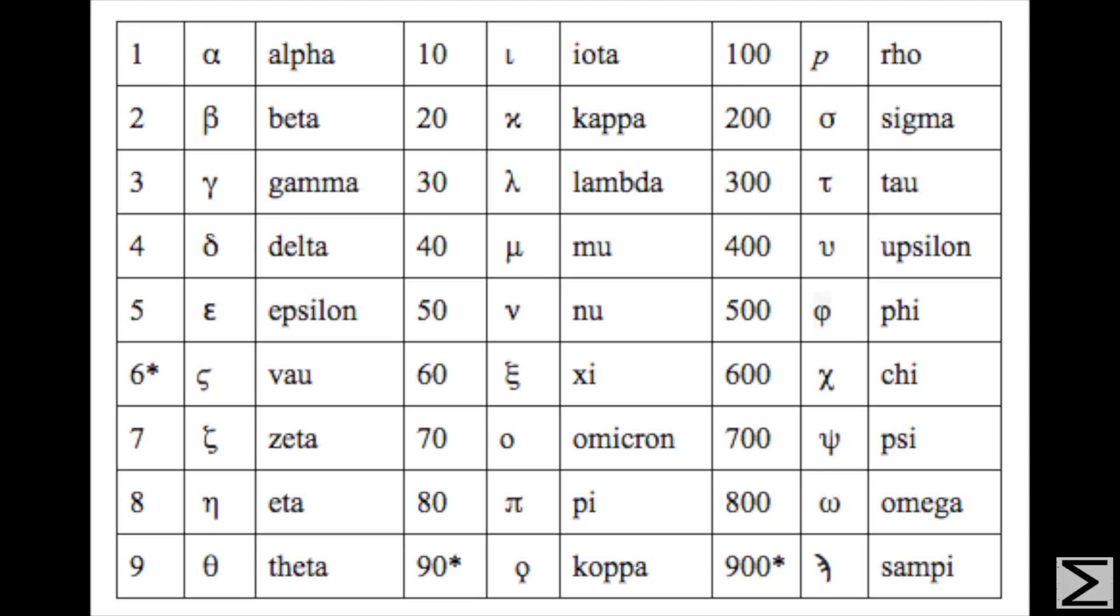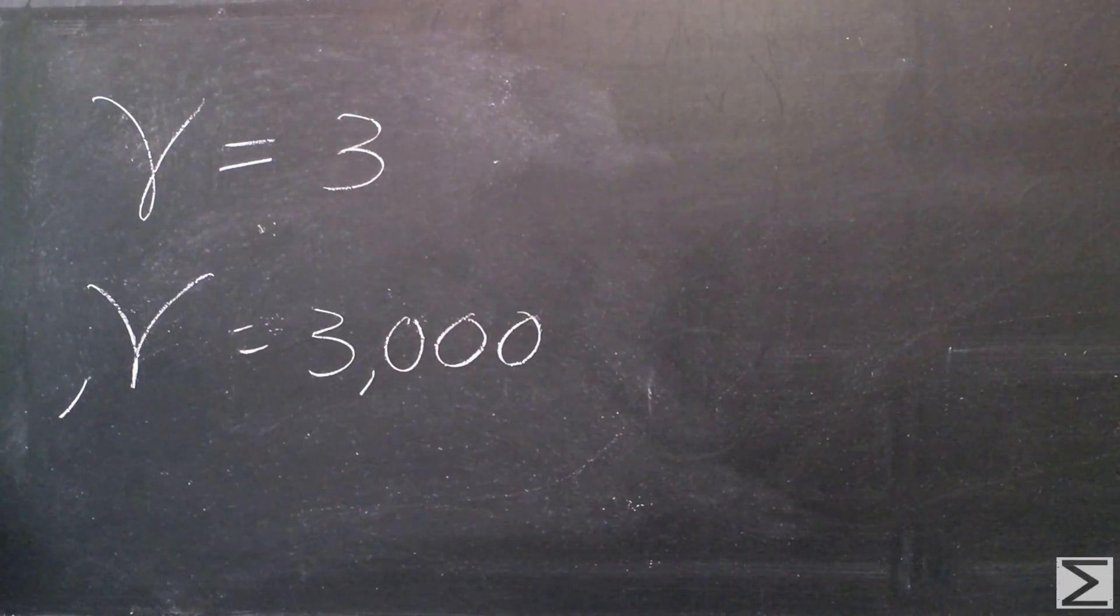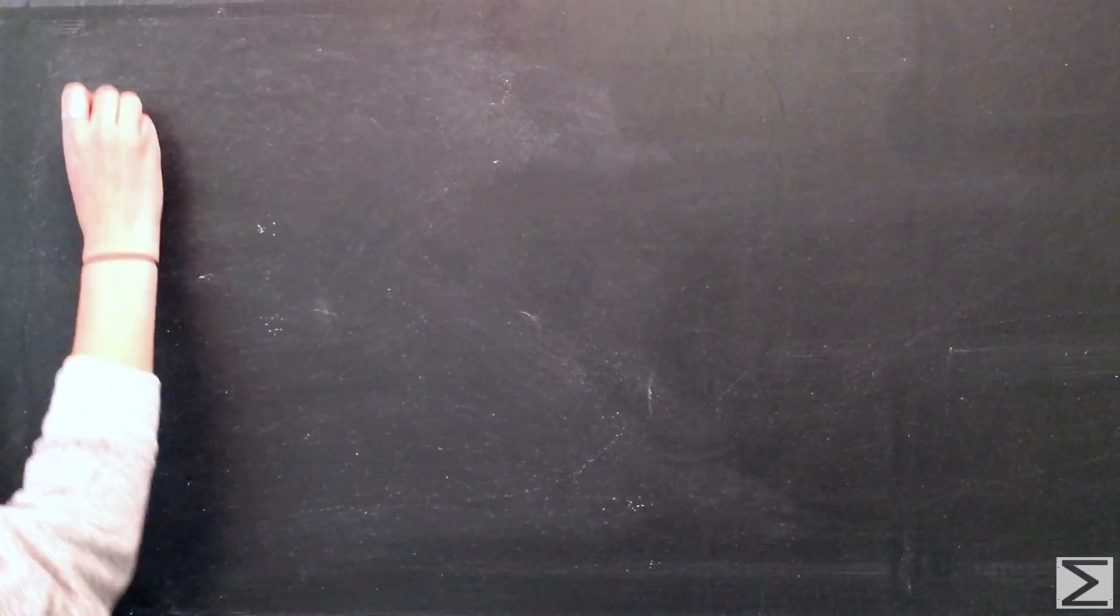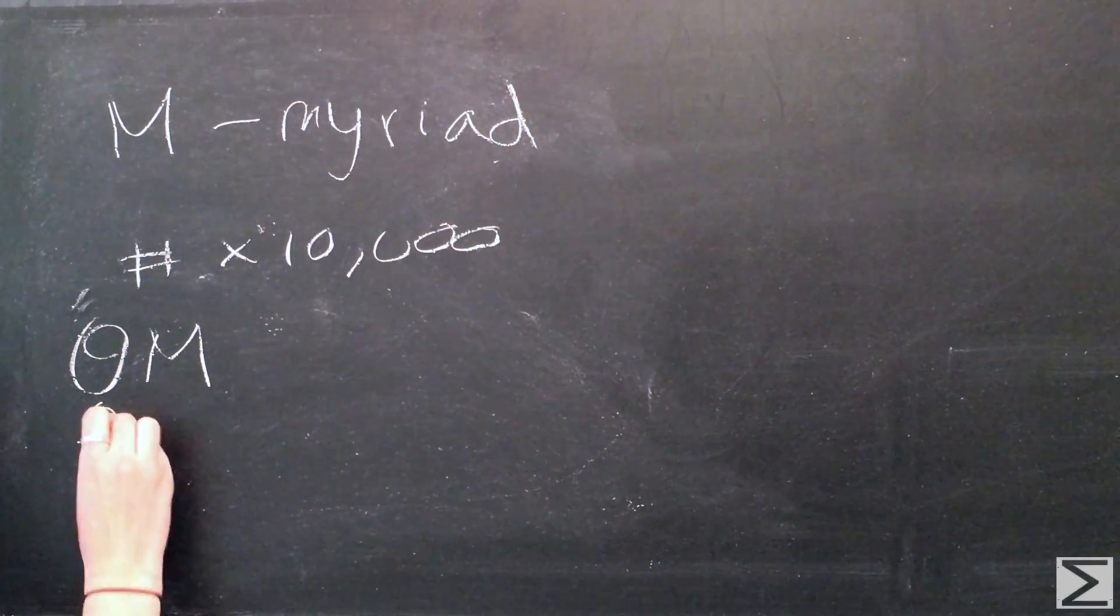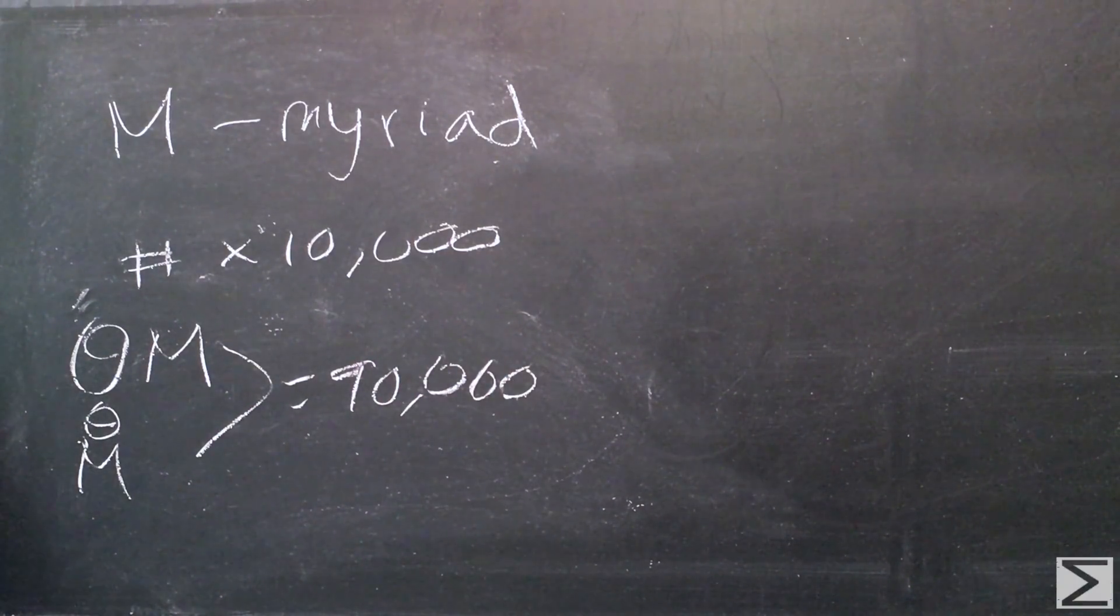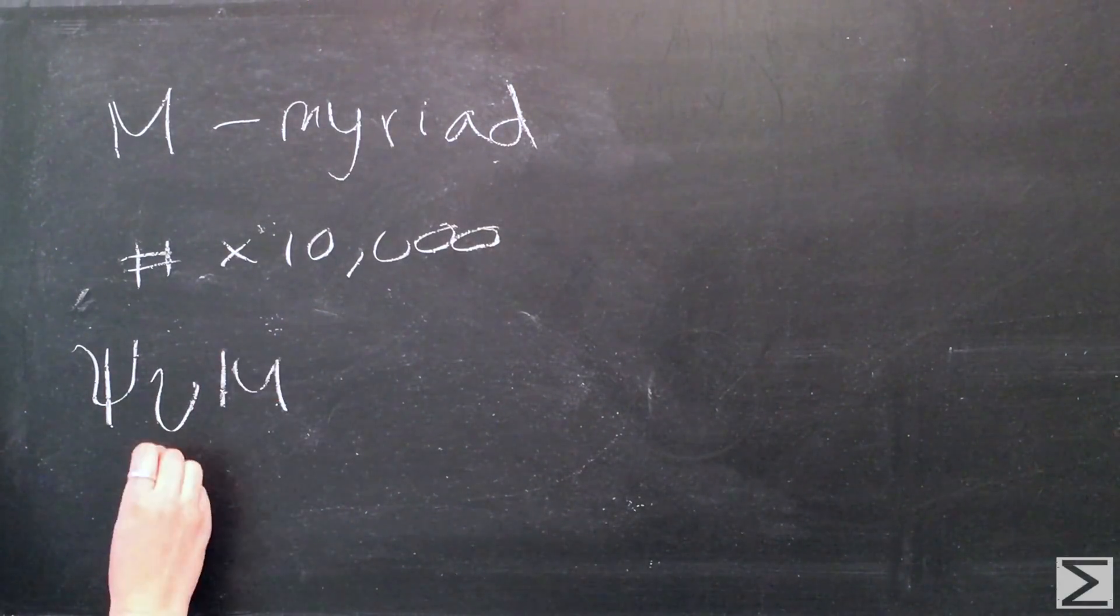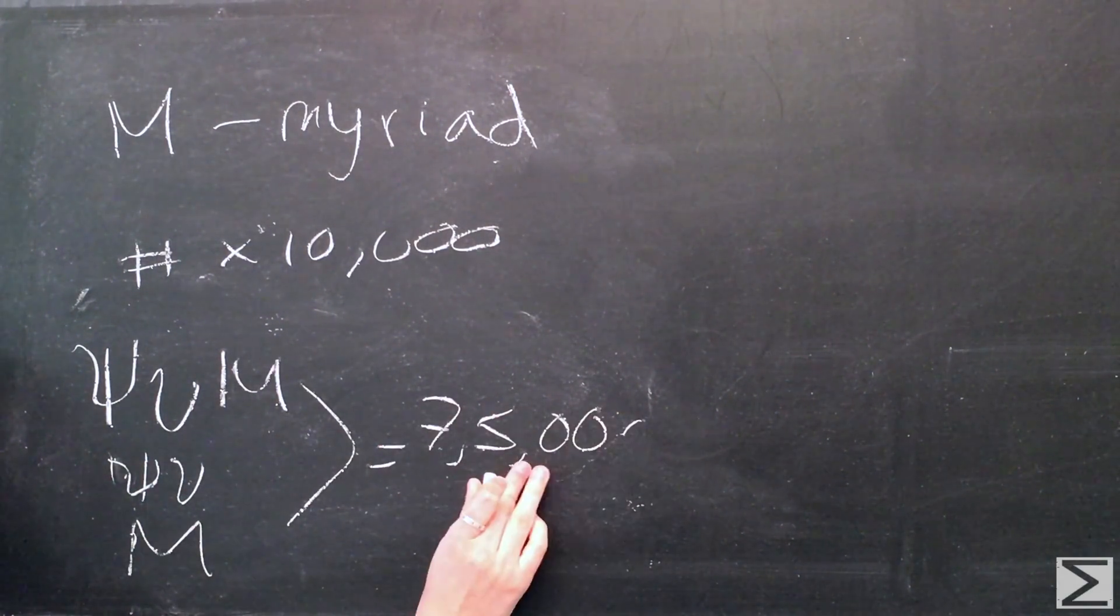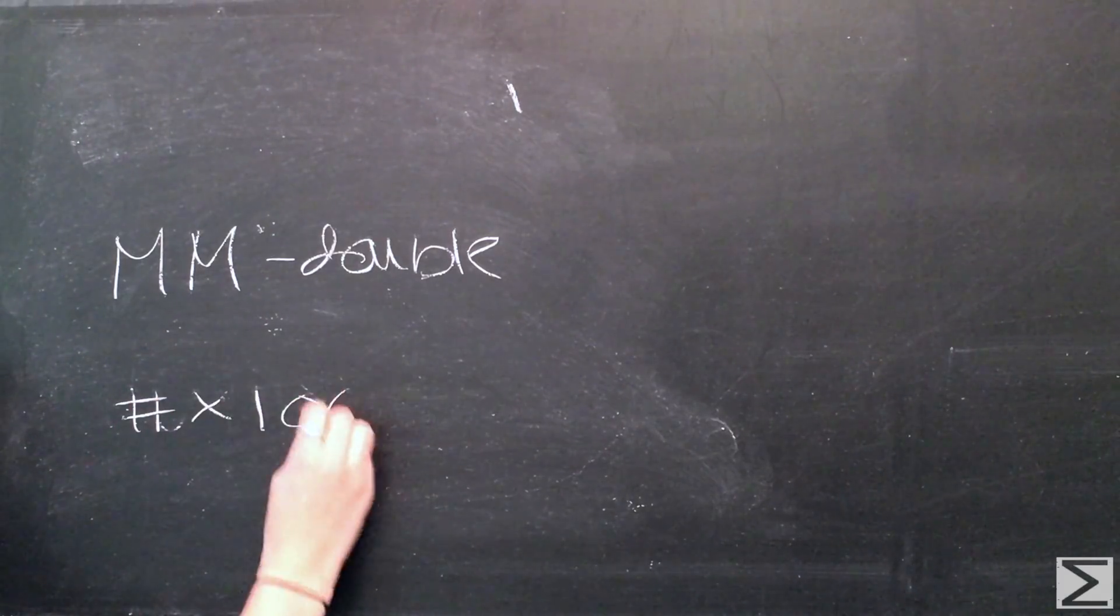For numbers larger than 999, an accent marked the lower left of a symbol meant that it was multiplied by a thousand. For tens of thousands, Greeks used a new letter or an M, or myriad, meaning ten thousand. This letter placed below or next to one of the Greek numerals meant the number was multiplied by ten thousand. A double myriad meant the number was multiplied by ten thousand squared.